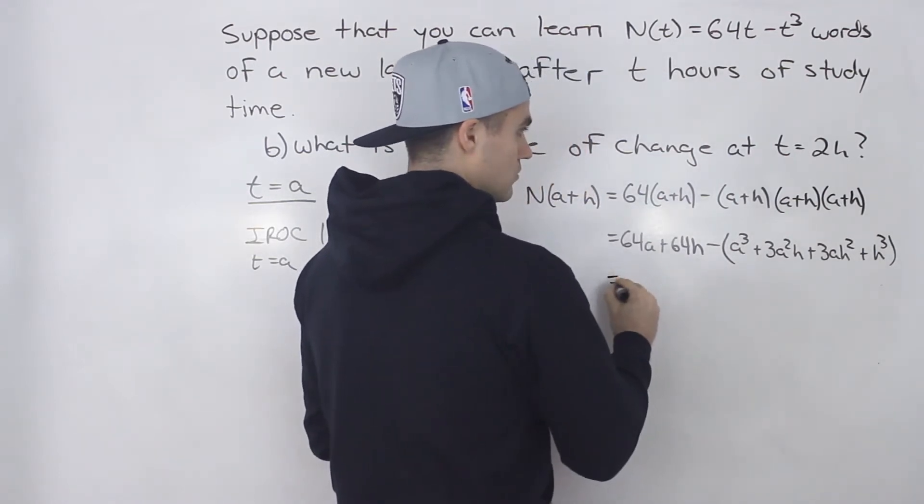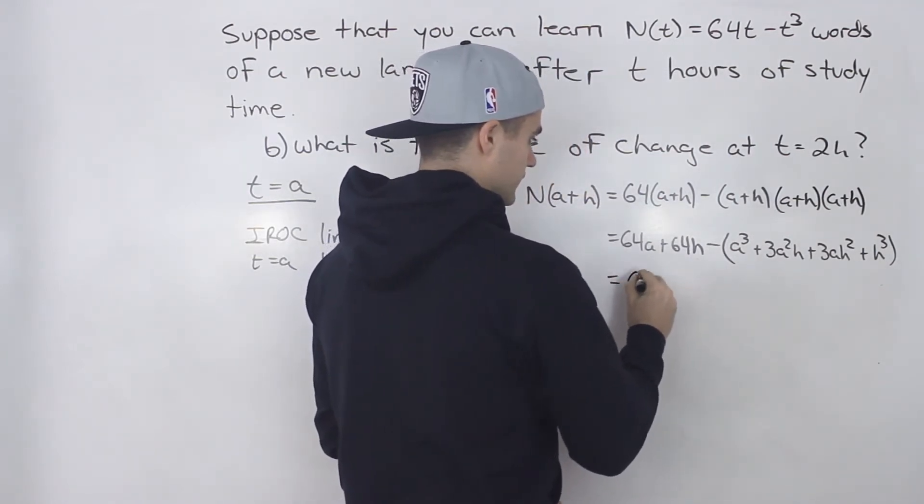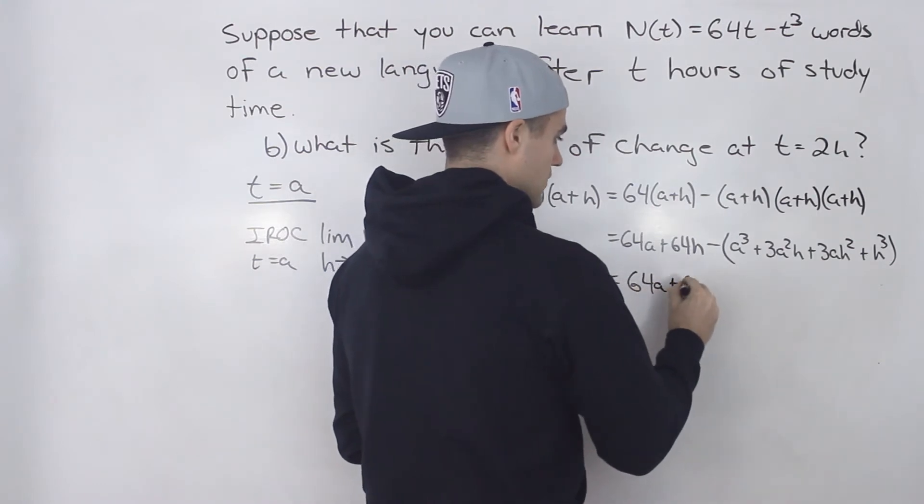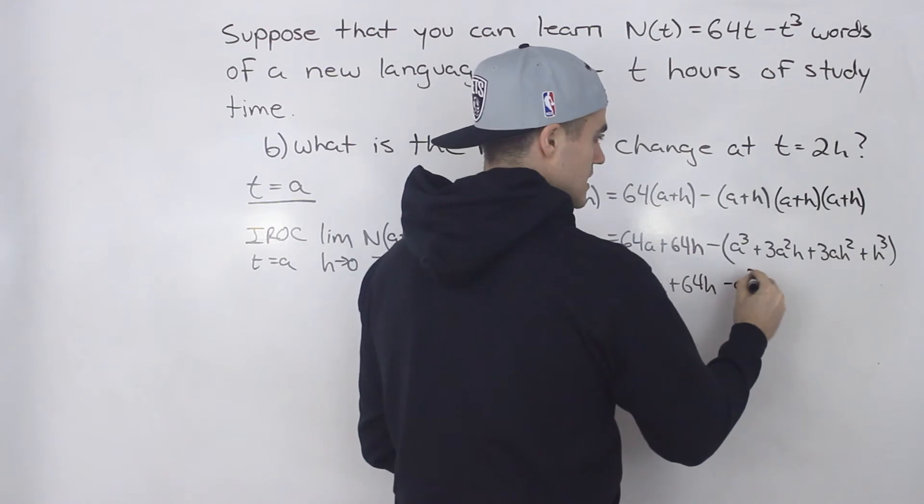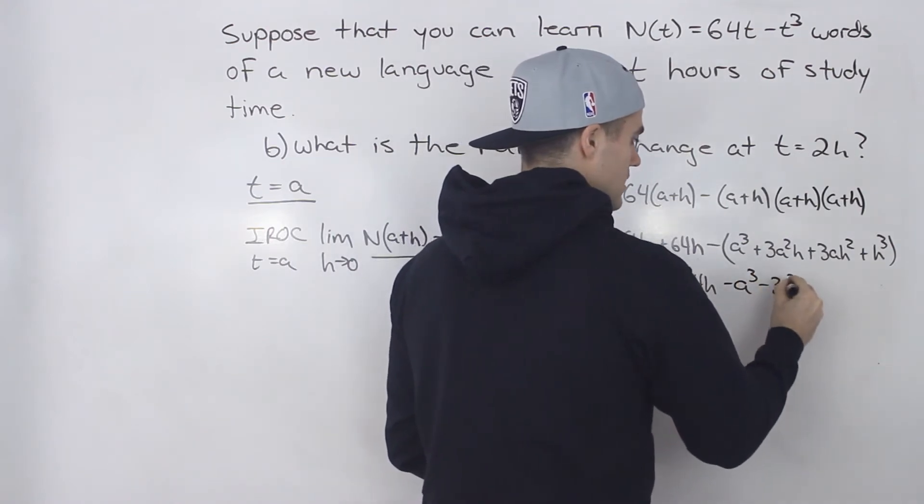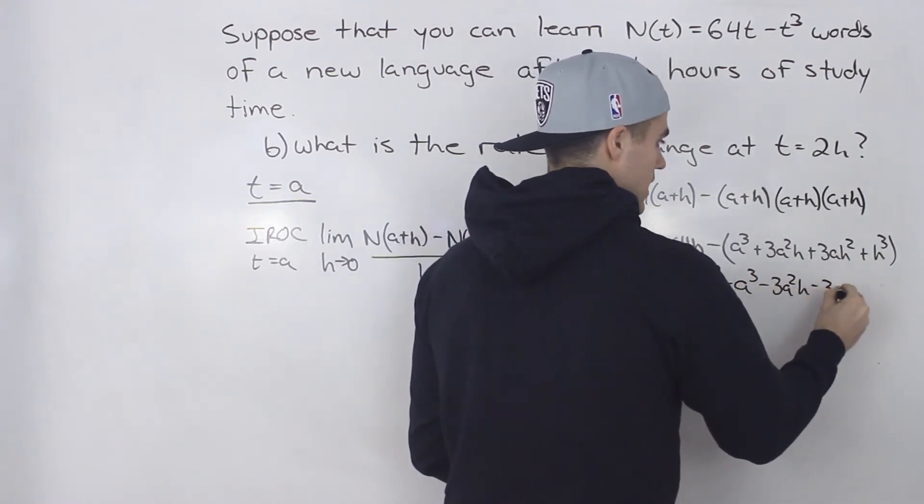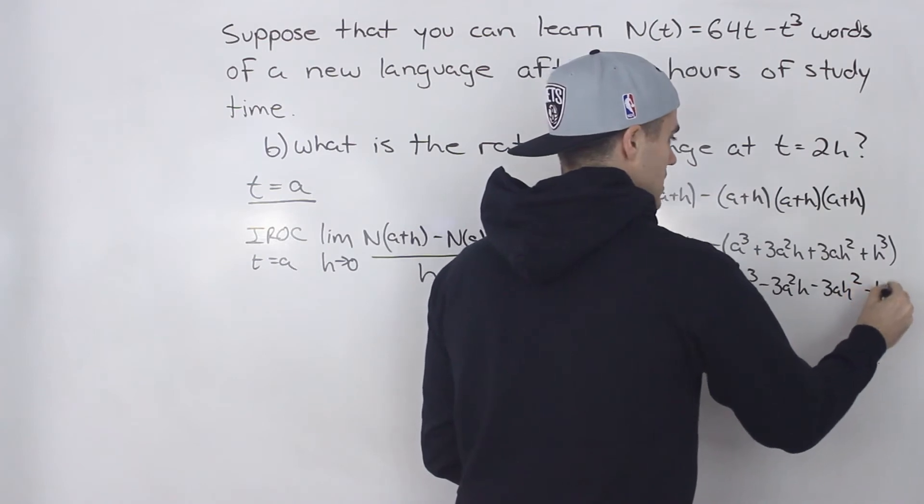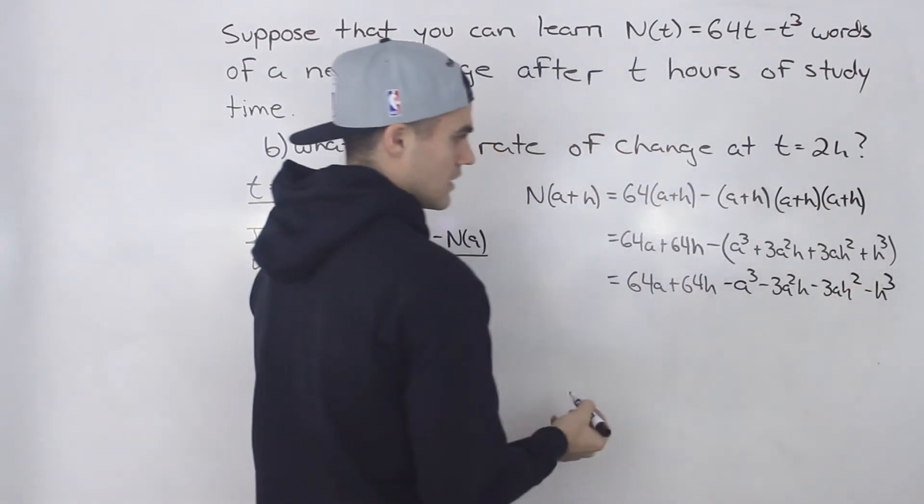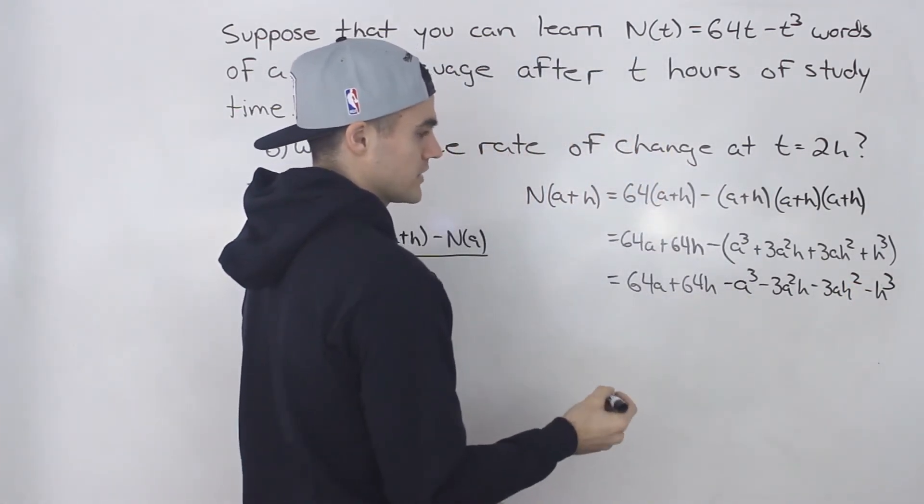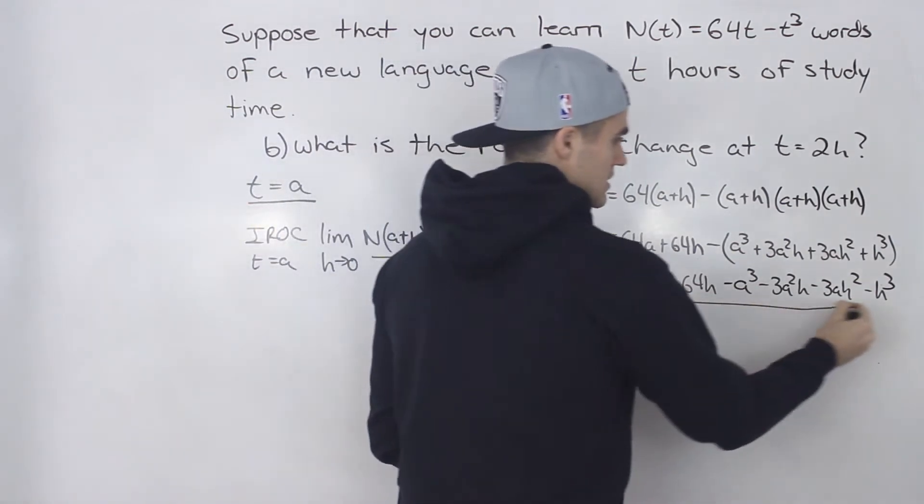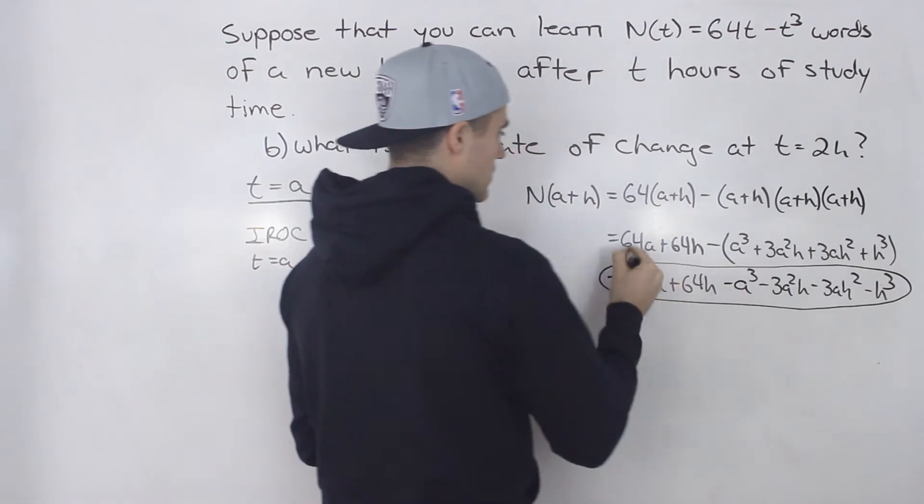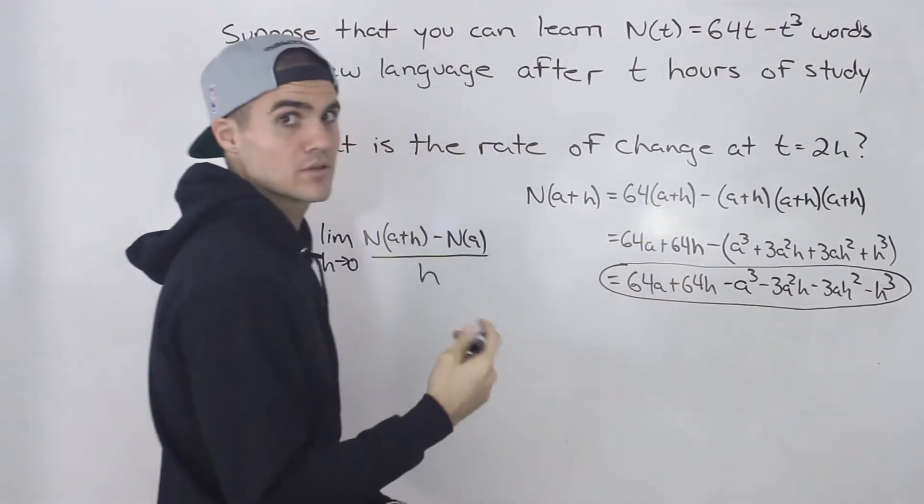So now what we do is we distribute that negative inside the brackets. So we have minus a cubed minus 3a squared h minus 3ah squared minus h cubed. And notice that unfortunately, there are no like terms. So this is the final expression for N of a plus h.